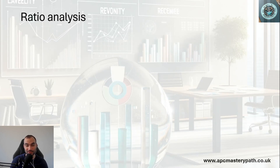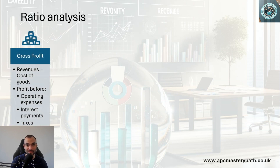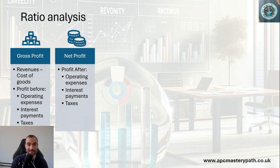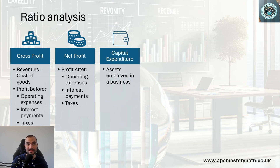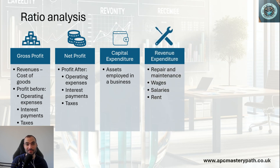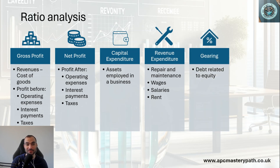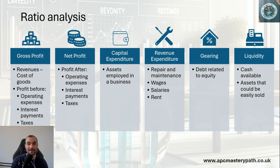Ratio analysis is a prominent area under accounting, and there are a number of definitions an RICS APC candidate is expected to know. Gross profit accounts for revenues from goods sold minus the cost of those goods, and does not account for operating expenses, interest payments, or taxation. Net profit accounts for depreciation and amortization, actual taxation, interest payments, and operating expenses. Capital expenditure is cash invested in assets deployed in the business. Revenue expenditure is linked to operating expenses such as rents, wages, and salaries. Gearing is a comparison between the amount borrowed and the shareholders' equity or net worth of the business. Liquidity is how much cash is readily available, including assets that could be liquidated.